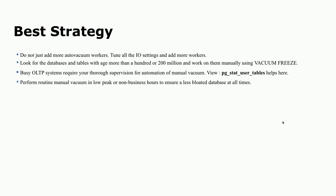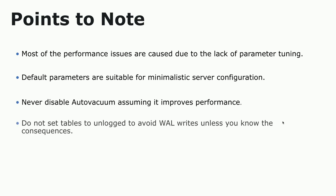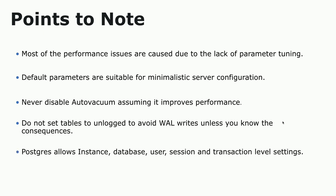Best strategy: monitor the age, tune IO settings to make vacuum fast and robust, and monitor dead tuples. Most performance issues are due to lack of parameter tuning or lack of understanding of the parameters. Never disable auto-vacuum. Do not set tables to unlogged just to avoid WAL writes — you would lose that data, it won't be replicated, and there's no crash recovery. Play smartly with session-level settings. That's everything — I'm open for questions.